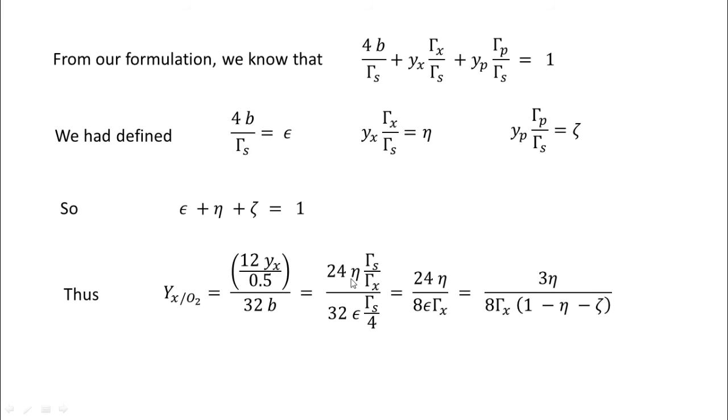There is some error here. Hold on. This is 24 here. This is eta gamma_s by gamma_x shown. 32 here, epsilon gamma_s by 4 is shown. 4 times 8 is 32. So, 24 eta by 8 epsilon gamma_x. The gamma_s's would get cancelled here. So this is what remains here.